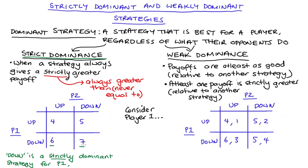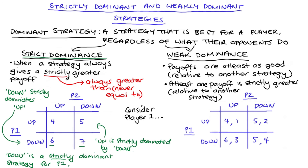Player one here only has two possible strategies — up or down — so I've been discussing this in an unqualified manner. When players have three or more strategies, the dominance relationship might hold between some strategies and not others. If we want to talk about how different strategies relate to one another, we could say: down strictly dominates up for player one. Equivalently, we might say that up is strictly dominated by down for player one.